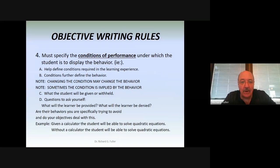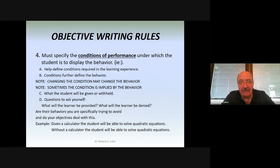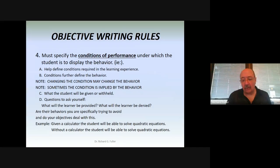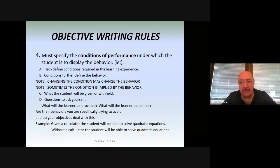The next rule is conditions of performance — your objectives must specify the conditions under which the student will display the behavior: what you're going to give the student or withhold from them. A change in condition may change the behavior. For example: 'Given a calculator, the student will be able to solve quadratic equations' versus 'Without a calculator, the student will be able to solve quadratic equations' — those are two different skill sets. What you give or withhold helps define what behavior you're actually looking for.